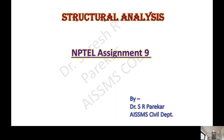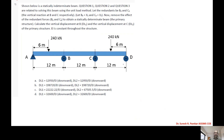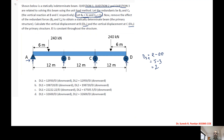Good morning. Today we are with NPTEL assignment number nine. The problem shows a statically indeterminate beam; questions one, two, three are based on this. We have to consider By as one redundant and Cy as another redundant. Now remove the effect of the redundants By and Cy to obtain a statically determinate beam. We have five total reactions minus three equilibrium equations, giving degree of static indeterminacy equal to two. Therefore By and Cy are chosen as redundants, and to find δL1 and δL2 we remove these redundants.